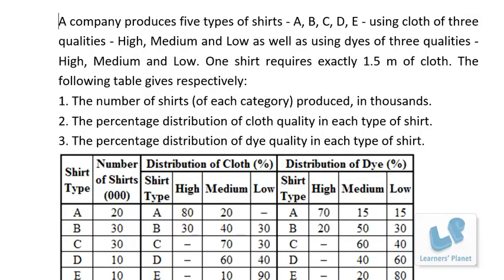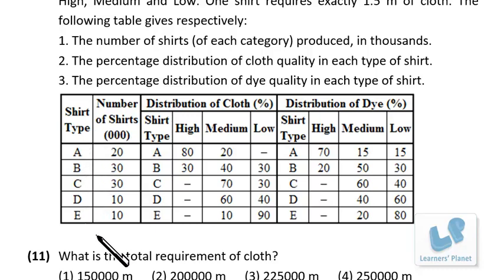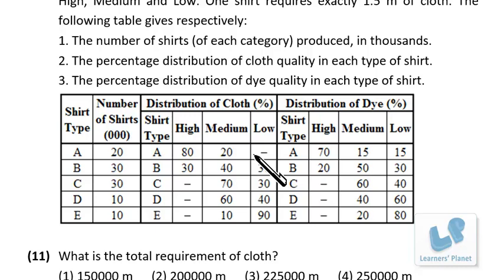New problem: a company produces five types of shirts — A, B, C, D, E — using cloth and dyes of three quality levels: high, medium, and low. One shirt requires exactly 1.5 meters of cloth. The table gives the number of shirts of each category in thousands (20K, 30K, 30K, 10K, 10K), the percentage distribution of cloth quality, and the percentage distribution of dye quality.